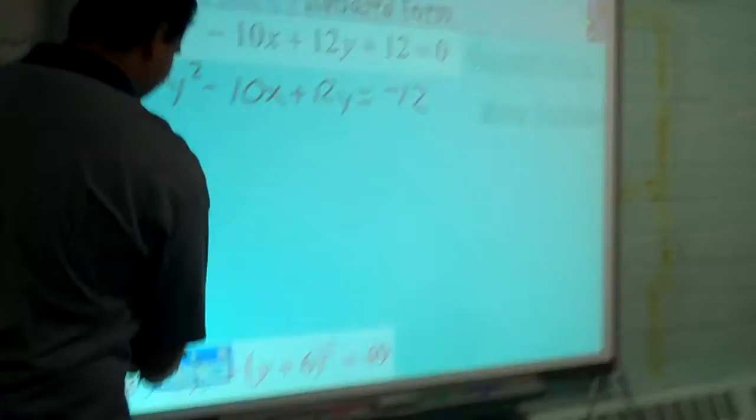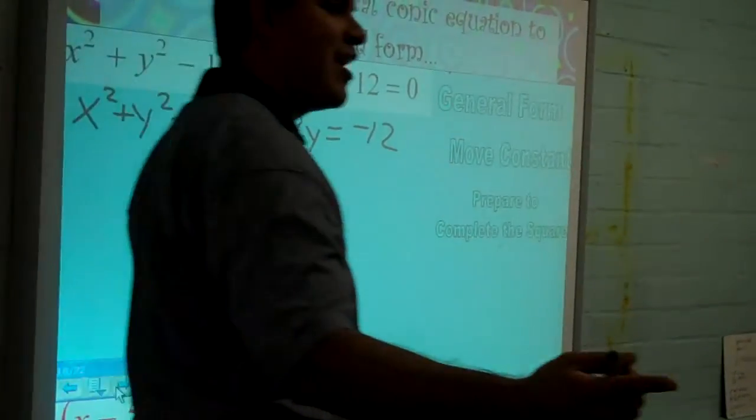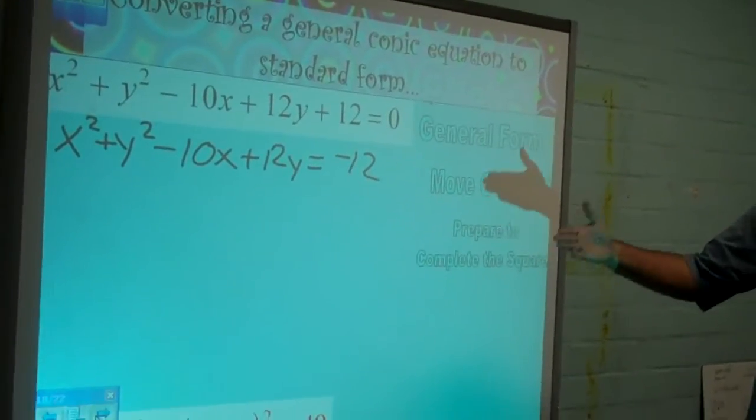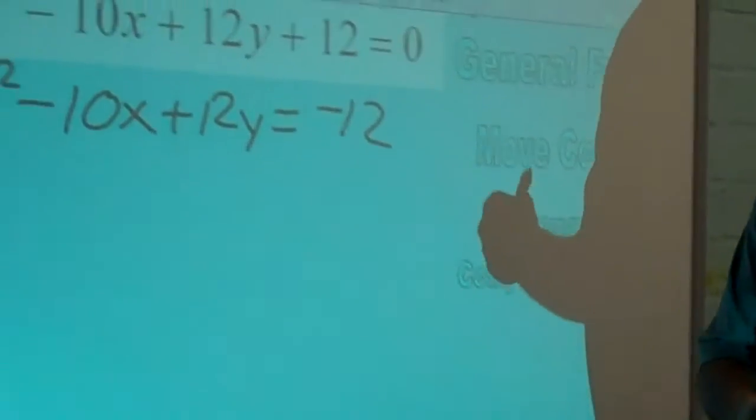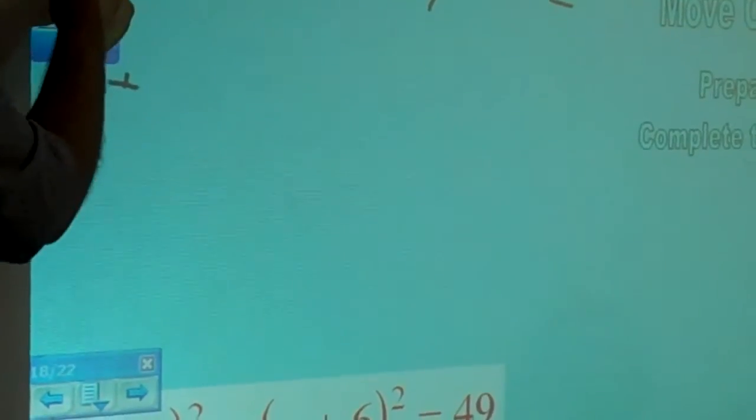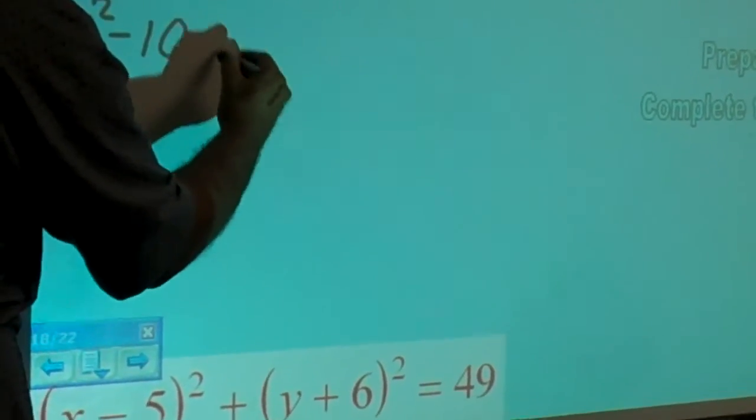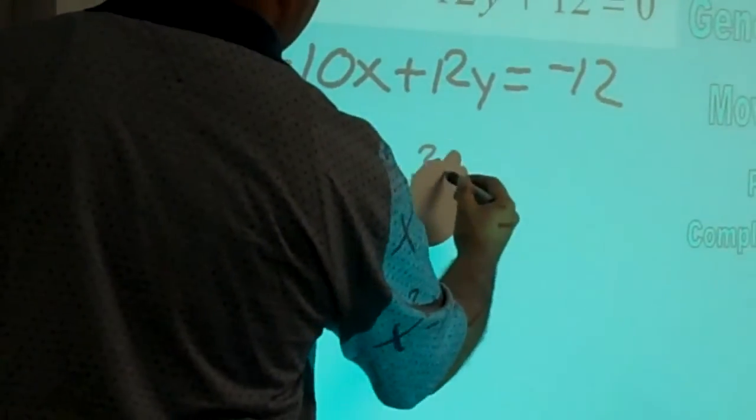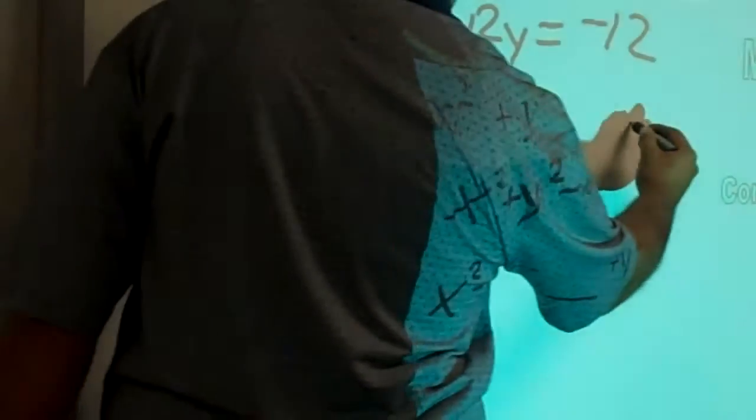After we've done that, the next step is going to be prepare to complete the square. Part of the reason why I asked you guys to learn this stuff is because I've never taught you completing the square. Complete the square is definitely something important when you go on to college math. Those college professors definitely want you to know how to complete the square. Preparing to complete the square means to put your x terms next to each other and your y terms next to each other and leave a space to complete the square. X squared minus 10x, and I'm going to leave a blank here because we're going to need that spot to complete the square. Then plus y squared plus 12y plus some blank. Again, there I'm going to need that spot available to complete the square. Equals negative 12.